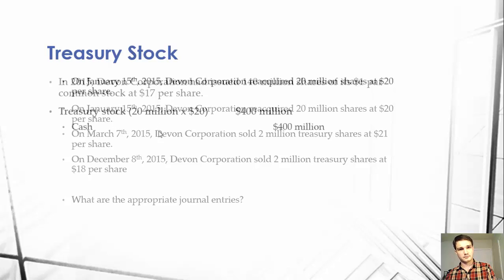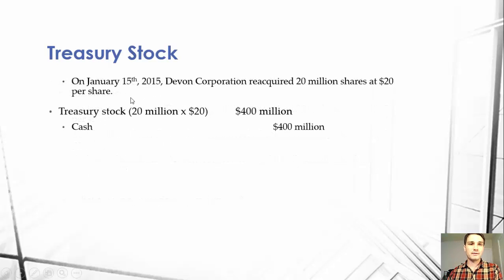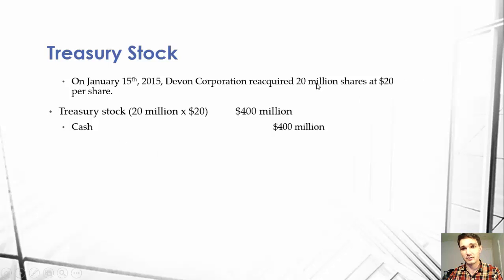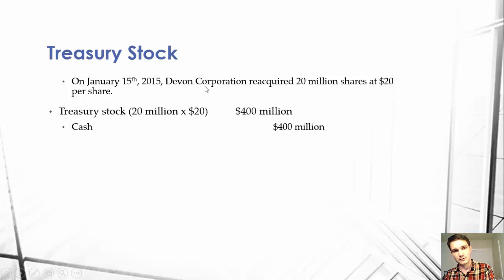So on January 15, 2015, Devin Corporation reacquired 20 million shares at $20 per share. Treasury stock is always recorded at cost initially. So we do the easy calculation of $20 times 20 million to get $400 million — that's our debit to treasury stock, because that's going to reduce our stock balance. And then we have our credit to cash because we're paying for that. This is the easiest journal entry of all the questions.